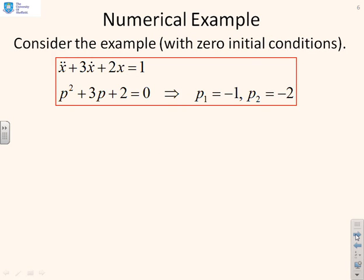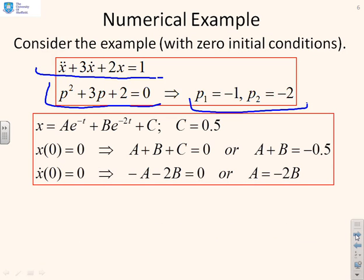Let's look at a numerical example. We've got ẍ plus 3ẋ plus 2x equals 1. Here's my characteristic equation: p² plus 3p plus 2 equals 0. If I solve for that, I get p₁ equals minus 1, p₂ equals minus 2. This means I've got a general solution of this form: x equals Ae^(-t) plus Be^(-2t) plus some constant C. I can use steady-state analysis to say that by inspection, C equals 0.5. I've essentially said 2x equals 1 in steady state, because at steady state, ẍ and ẋ are both 0.